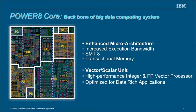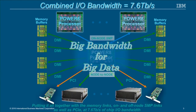From the point of view of the backbone of OpenPower systems, the Power processor itself features an enhanced microarchitecture, a large amount of execution bandwidth, SMT8, transactional memory, vector scalar units (SIMD), and a high-performance integer and floating-point vector processor. It's really optimized for data-rich applications — a processor built for big data and very high bandwidth. The combined I/O bandwidth is around 7.6 terabits per second, which is a massive amount. Putting together memory links, on- and off-node SMP links, and PCIe, it runs at around 7.6 terabits of chip I/O bandwidth.